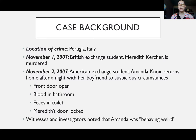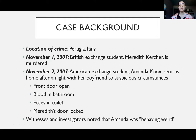Amanda Knox was an American exchange student studying in Perugia, Italy, and she was living with British exchange student Meredith Kircher, who was murdered on November 1st, 2007. On this night, Amanda claimed to have been with her boyfriend at his house, Raffaele Solicito. In the morning she wanted to go back to her house and change, take a shower, but she returned to her home under suspicious circumstances. Her house had the front door open and she saw a little amount of blood in the bathroom, but she didn't make much of it.